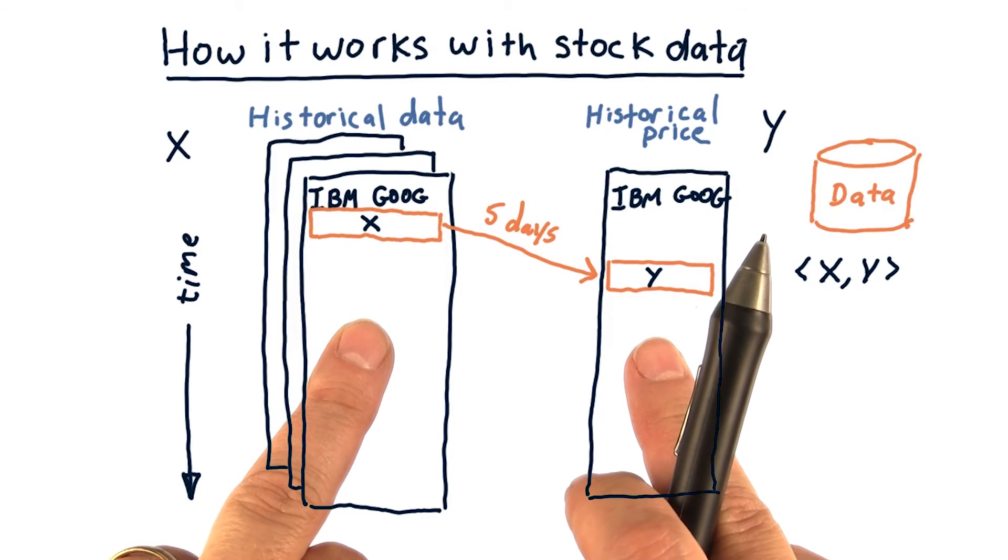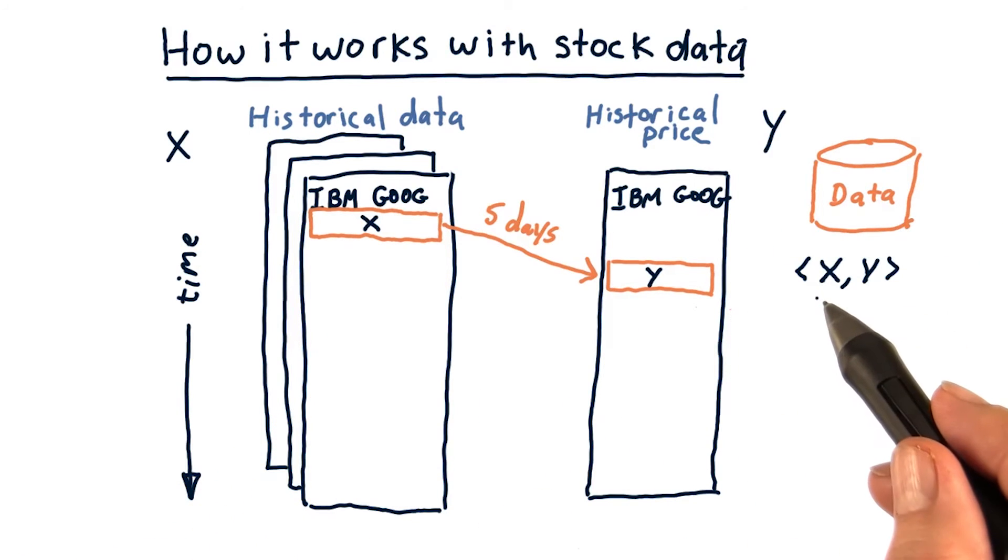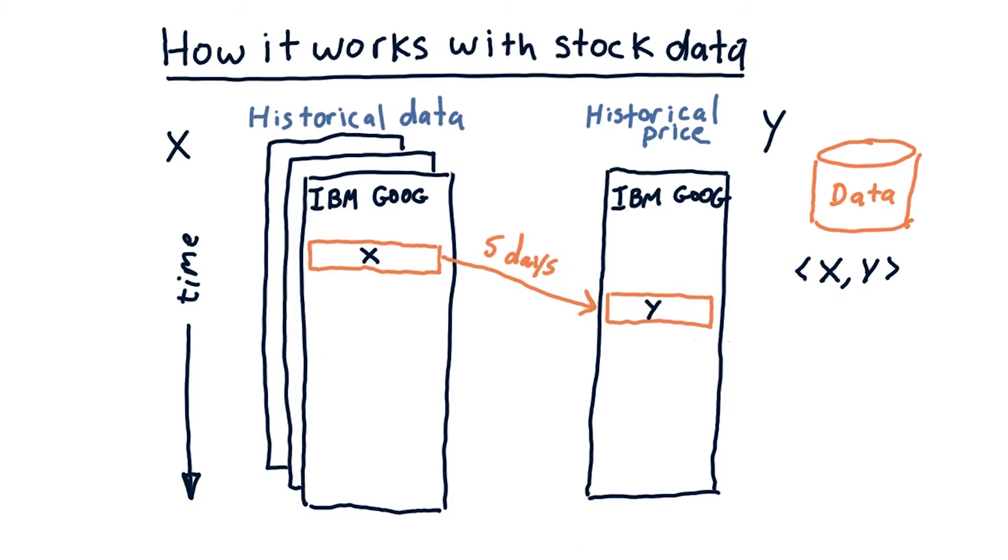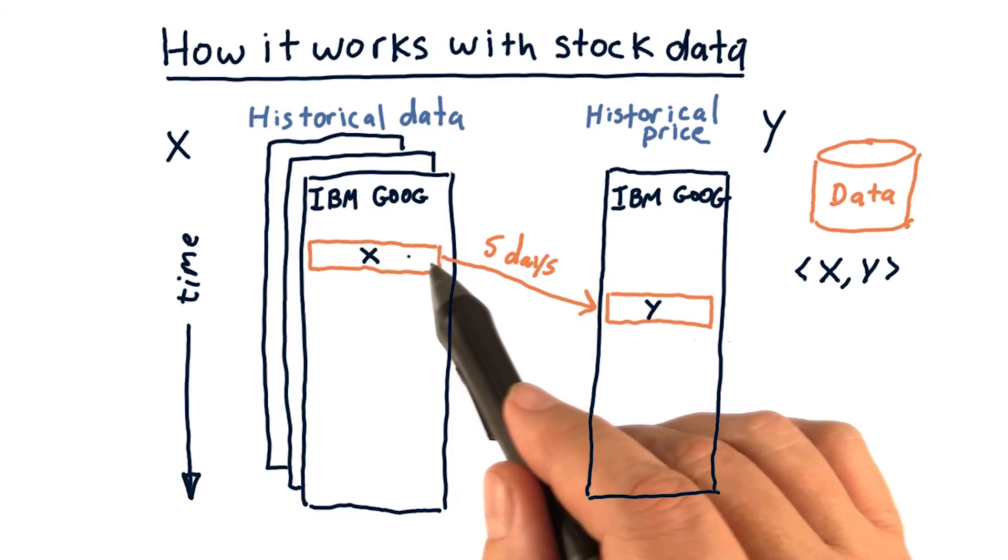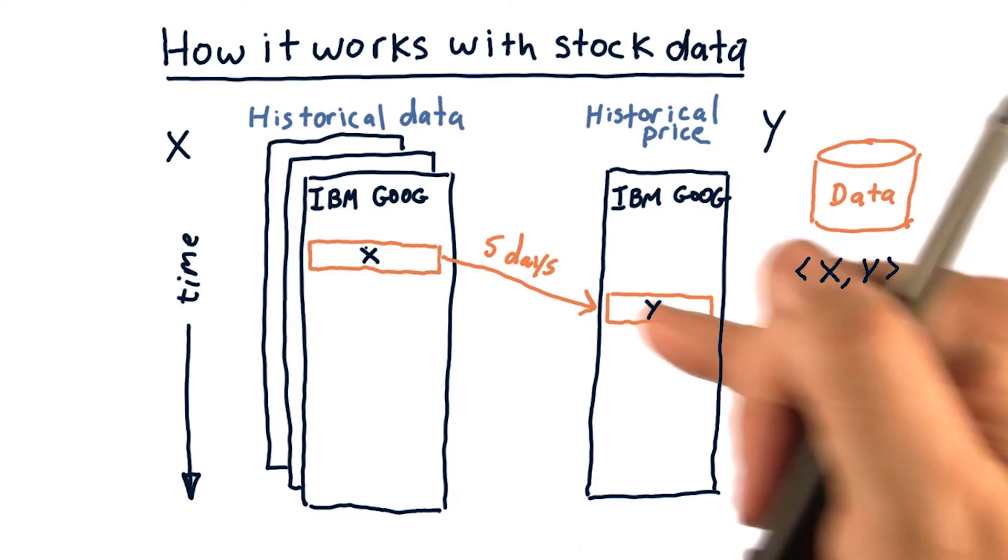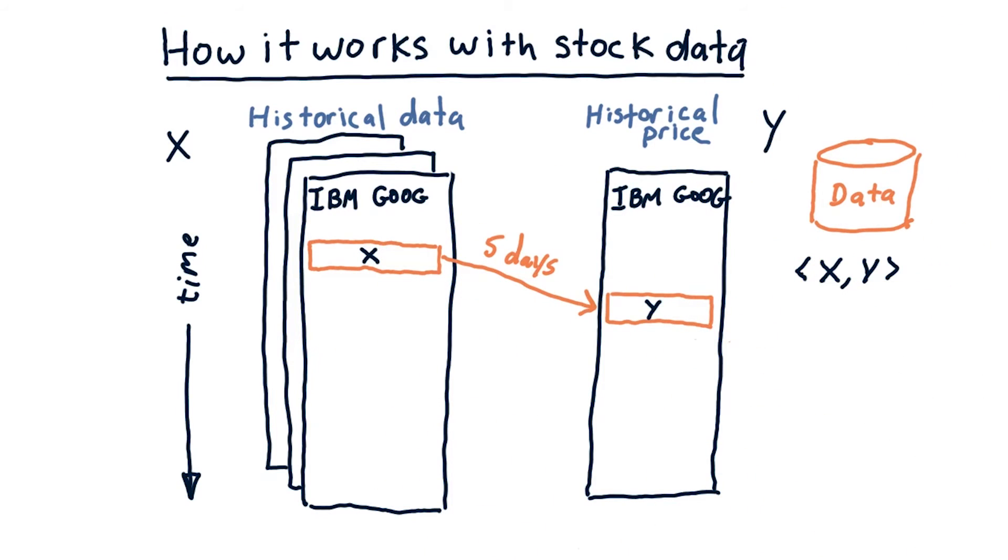We save that x, y pair into our data. And remember, x can be multidimensional. And that's one instance of data. We move forward one day. So we've got a new set of x's and a new y. And we record that in our database.